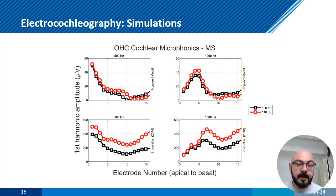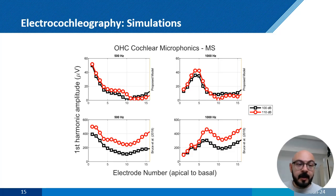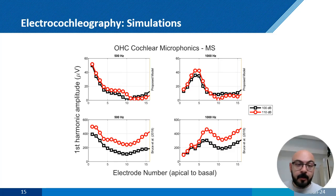Now let's look at some ECoG simulations using high-level stimuli. On the top row of this figure we can see the first harmonic amplitude results of the proposed model, whereas on the bottom row we can see the results of the phenomenological model used previously. Two different stimuli were used — one at 500 Hz and one at 1,000 Hz. The tonotopic mapping allocates electrode 1 to the 500 Hz region and electrode 4 to the 1,000 Hz region. Both models generate a peak at the correct electrode for each stimulus frequency; however, in the previous model the cross-turn stimulation effect is more pronounced, and the first harmonic amplitude values are an order of magnitude higher, consistent with the outer hair cell potential overestimation seen earlier.